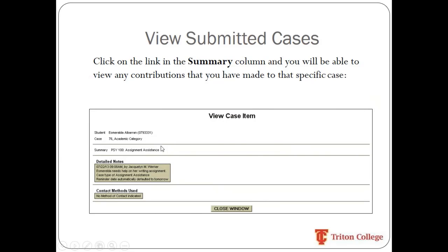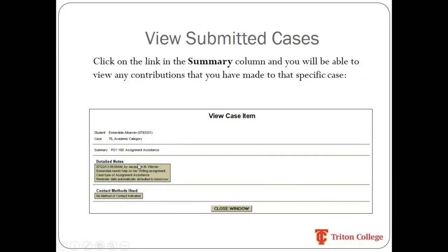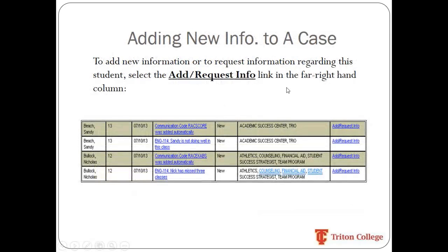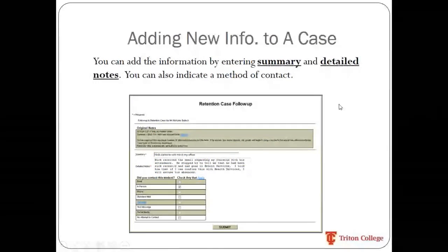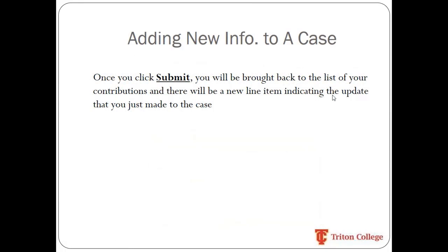If you want to view more information on a case, under the Summary column on that screen, you can click the hyperlink to go to a detail screen where you can see your detailed notes. If you can't remember exactly what you wrote, you can go in and look at that. You can also add or request information using the blue hyperlink on the right-hand side. If you've had a conversation with the student and have pertinent information to add, click that link — it takes you to a screen similar to the initial case creation form where you can add a summary and more detailed notes, and the case will be updated.